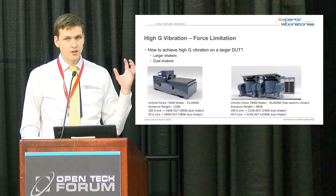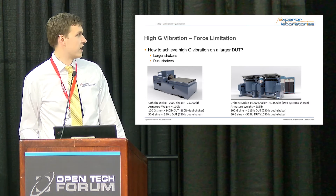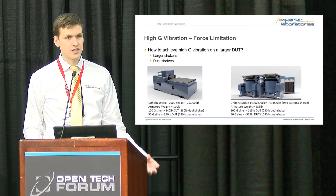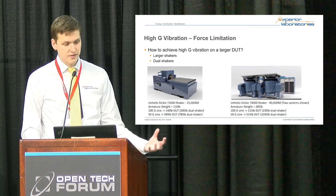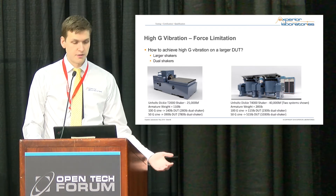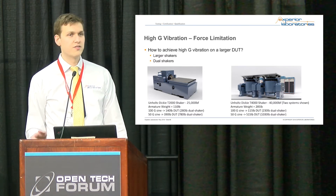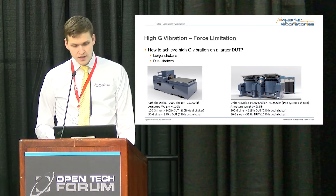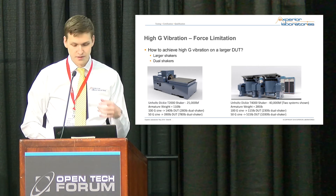Another option without going to a larger shaker is to hook up two shakers together. We've done that before — you essentially double the force pounds. So instead of 25,000 you get 50,000, and you can go from a 140-pound DUT to a 280-pound DUT, with the article spanning the two shakers. Of course you have to factor in the extra armature and extra slip table.